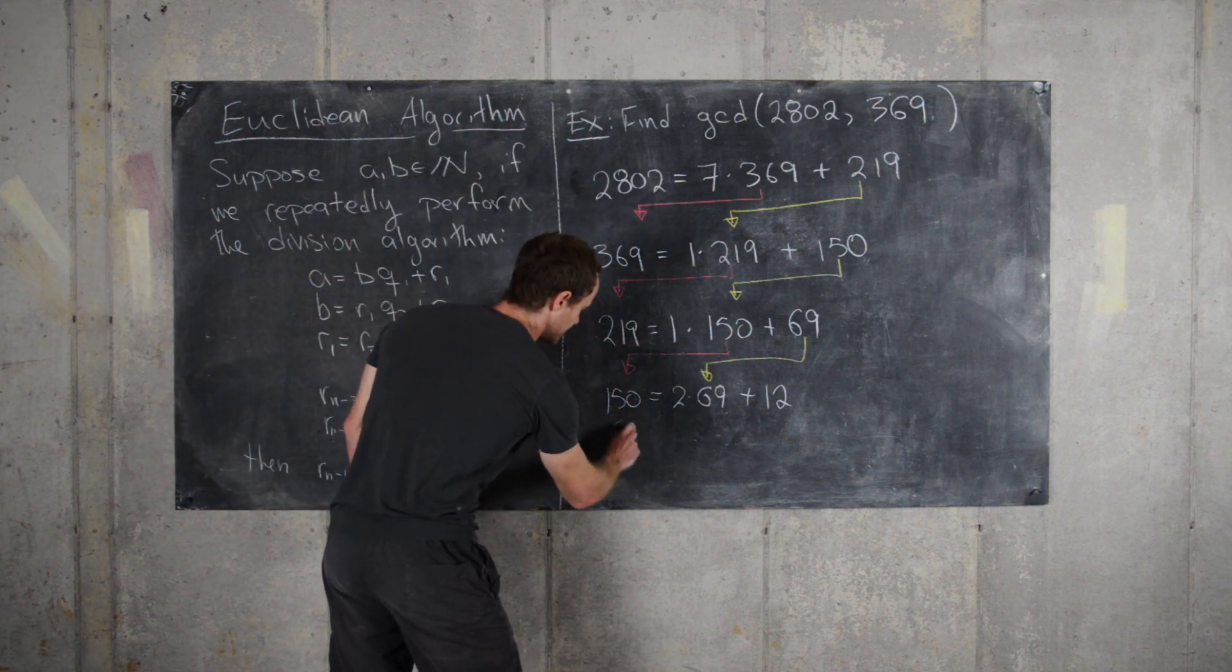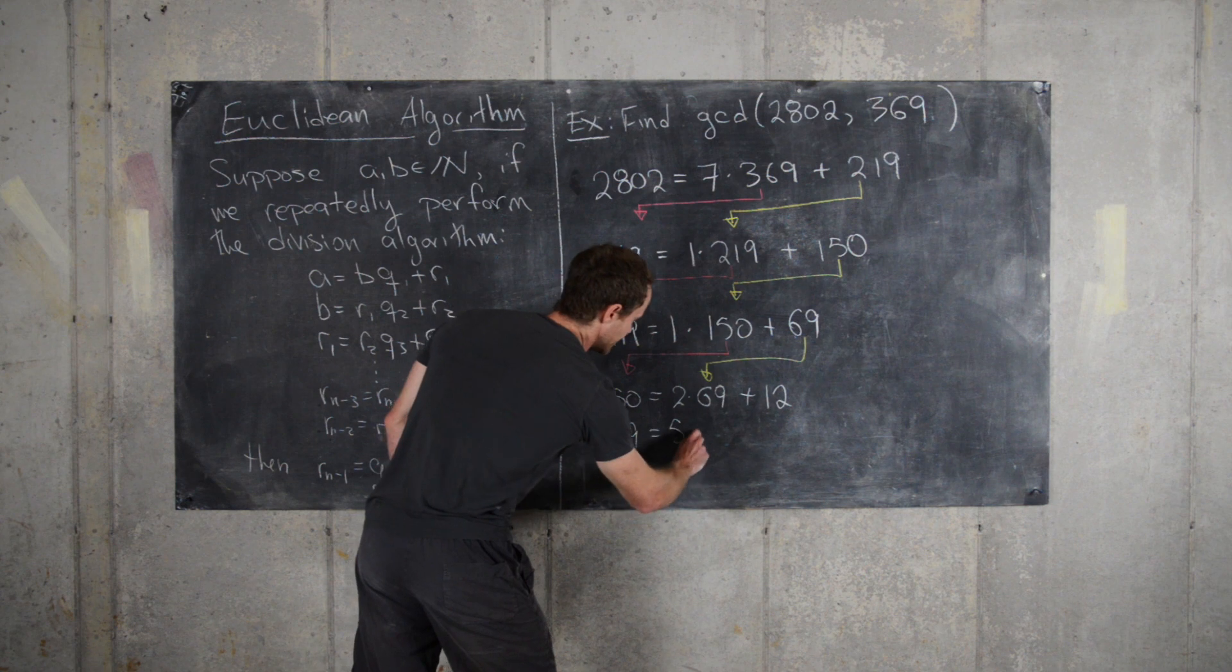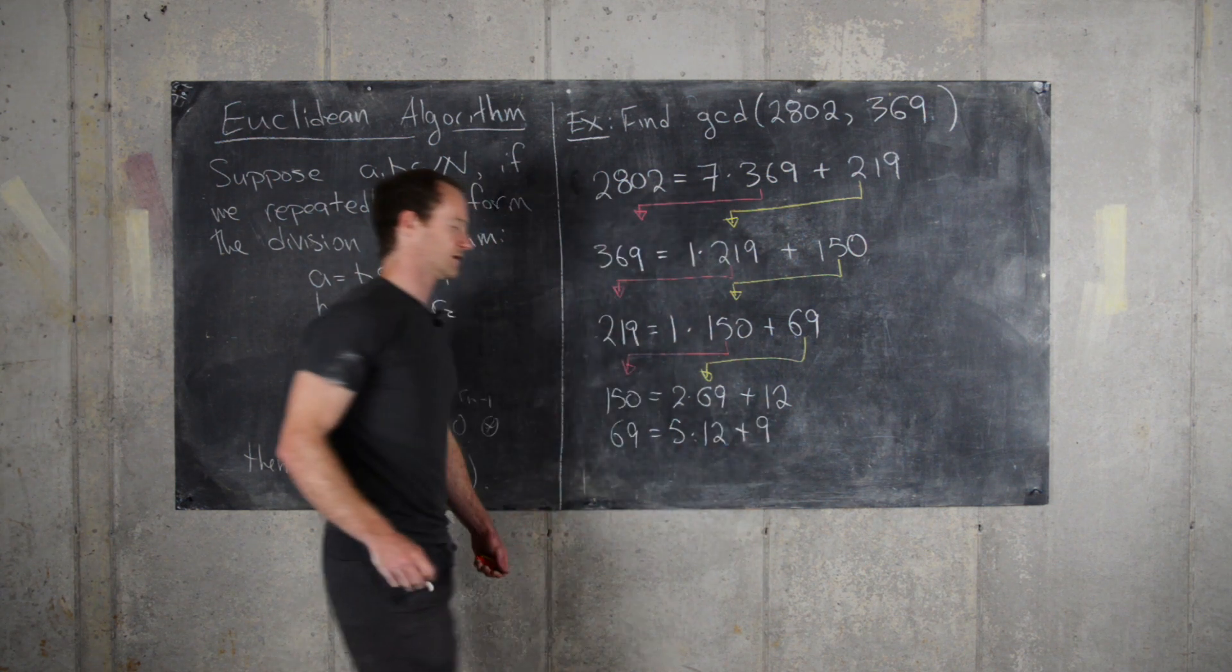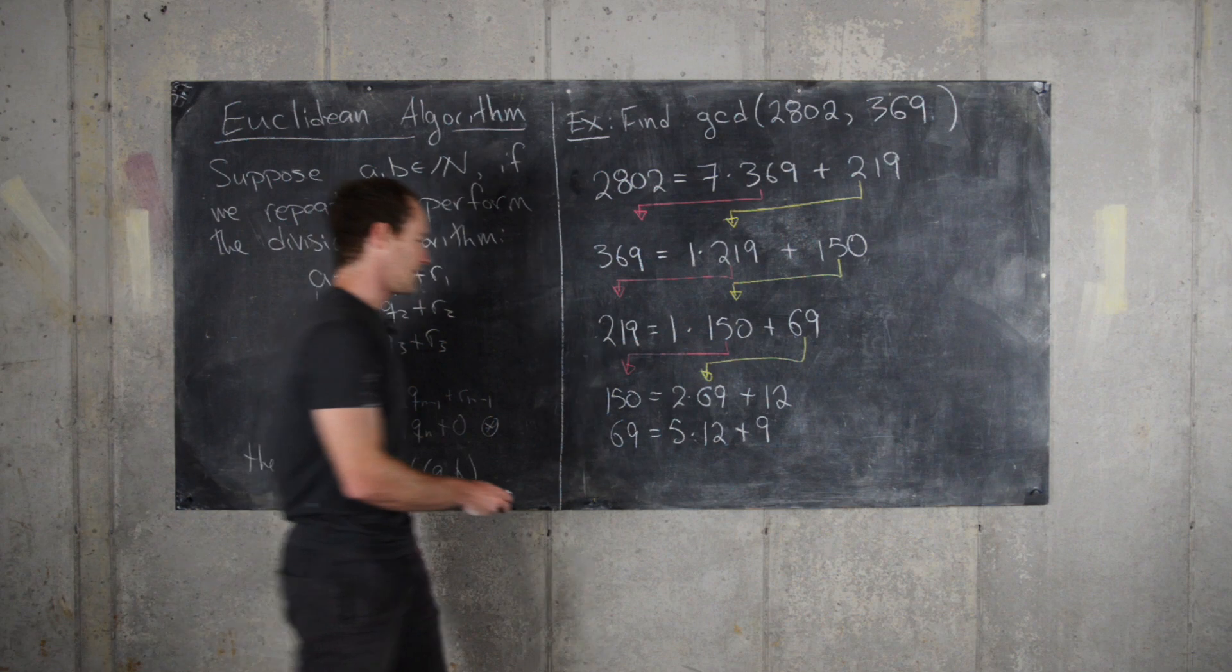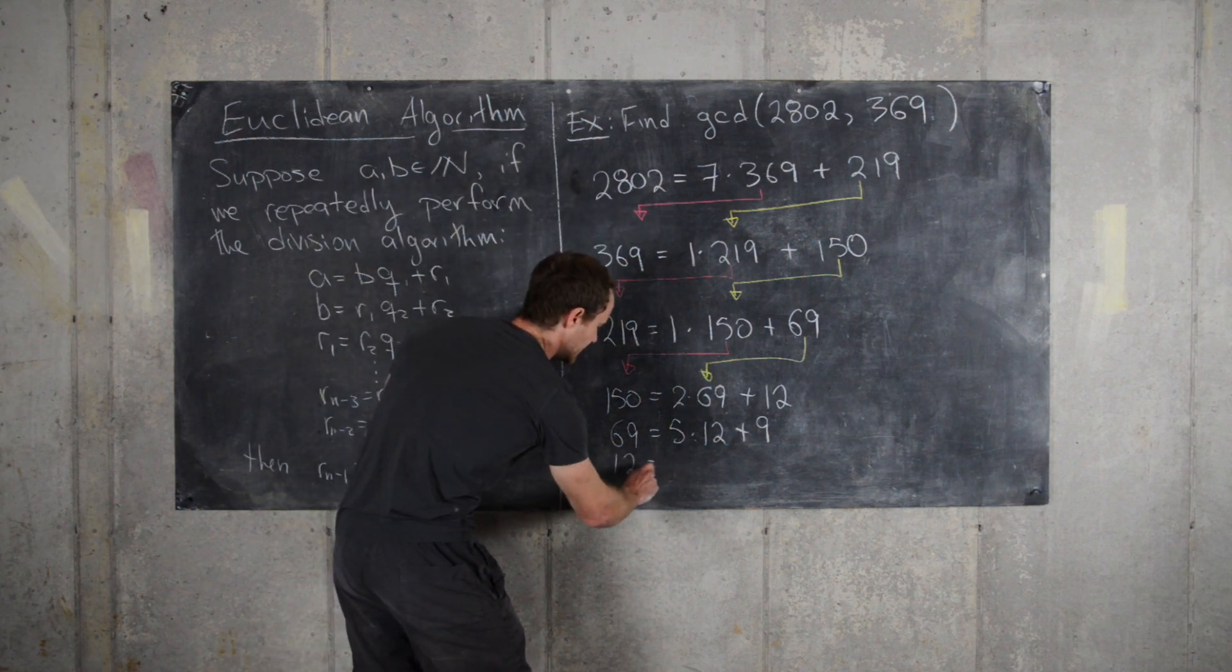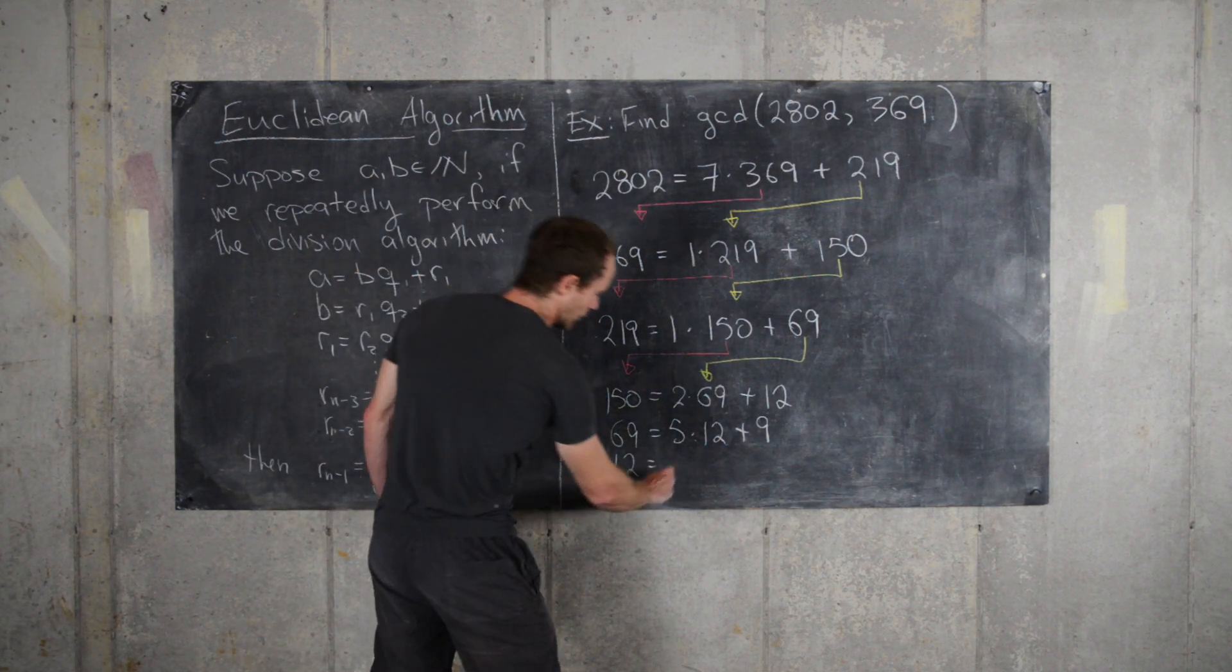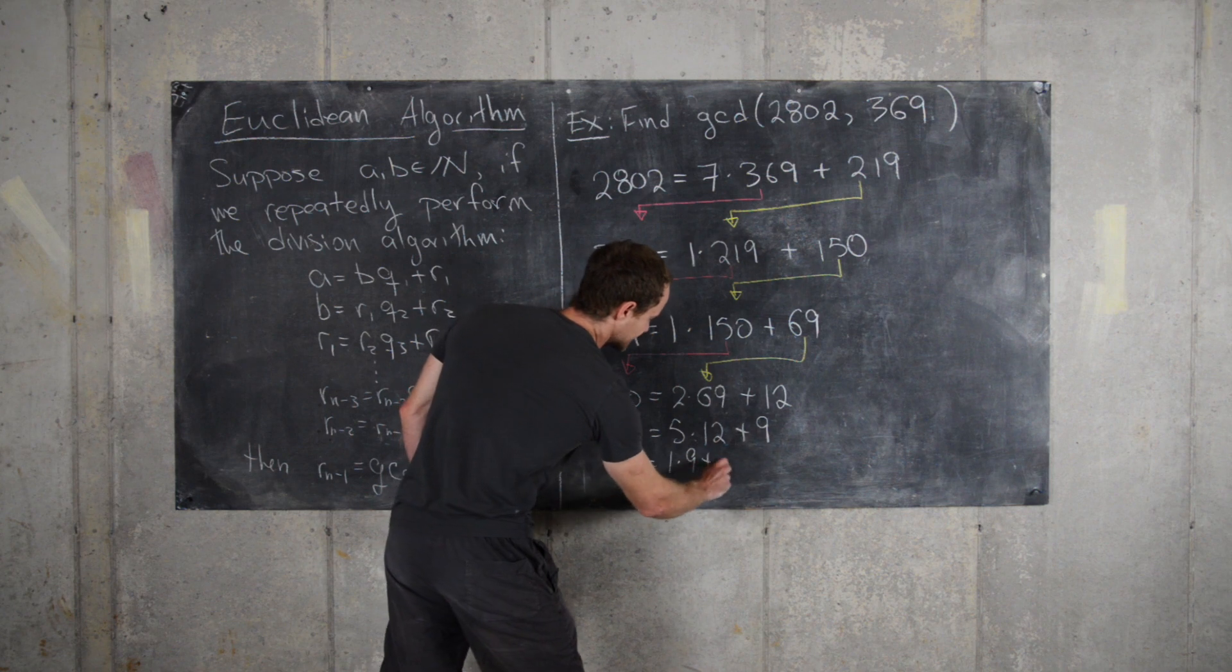So 69 equals 5 times 12 plus 9. Now things are shaping up. So we get 12 equals 1 times 9 plus 3.